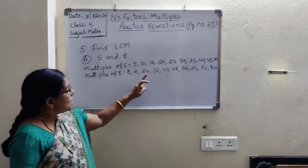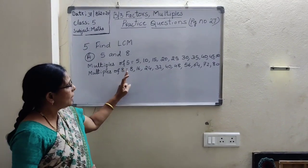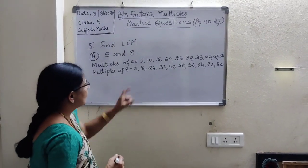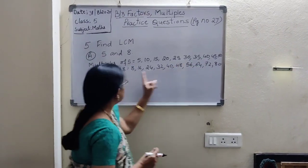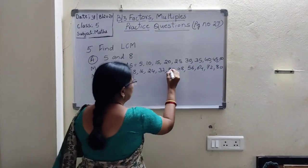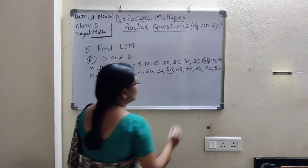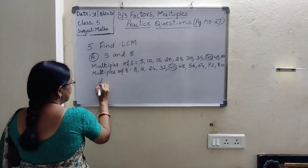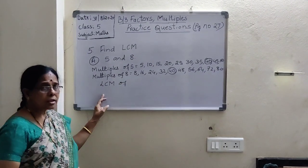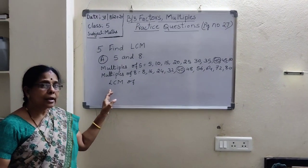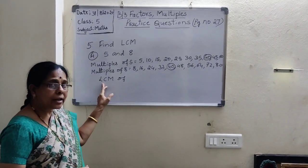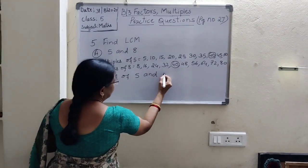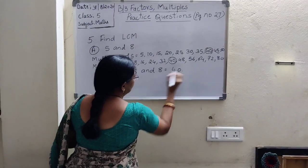Which is the least common multiple of 5 and 8? Least means small — which is the least common number? Starting from the beginning, 40 is there in both. 40 is the common number in both multiples of 5 and 8. So you have to write: LCM means least common multiple. LCM of 5 and 8 is equal to 40.